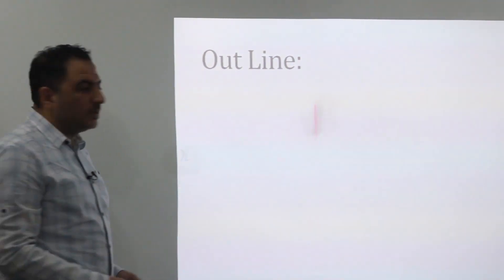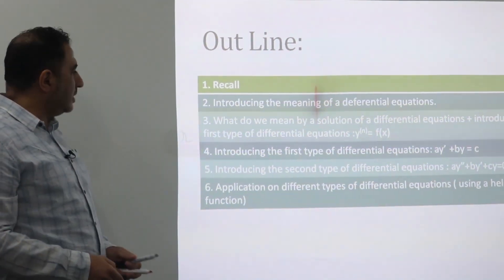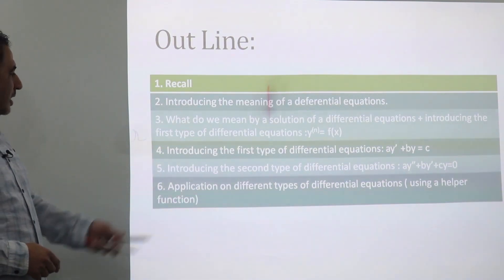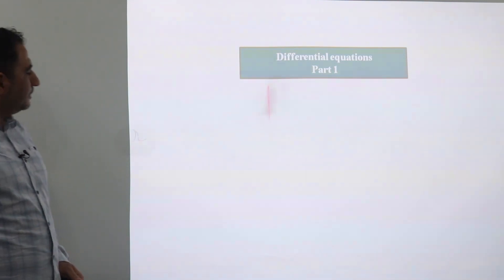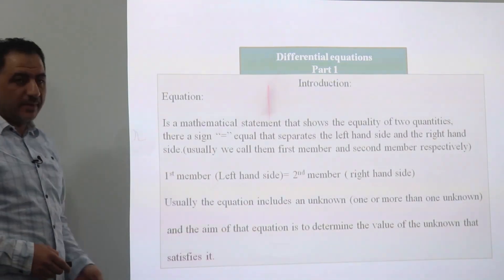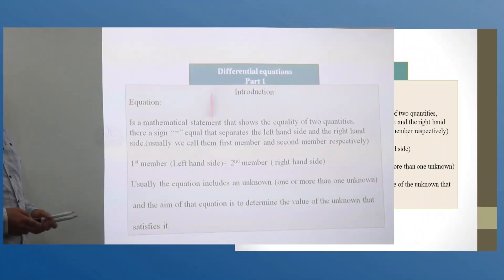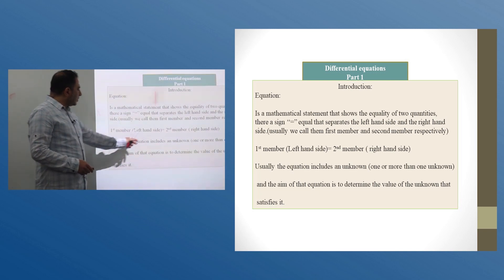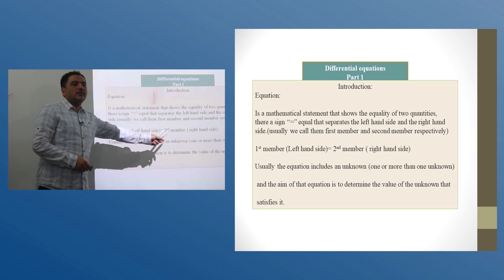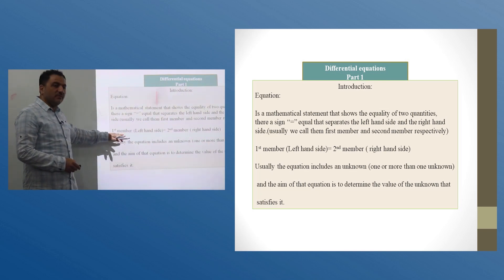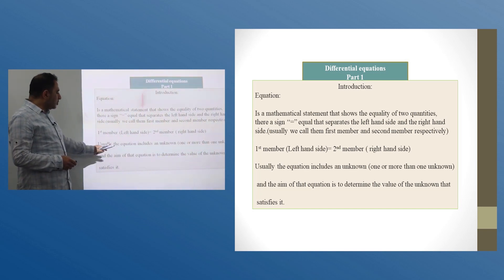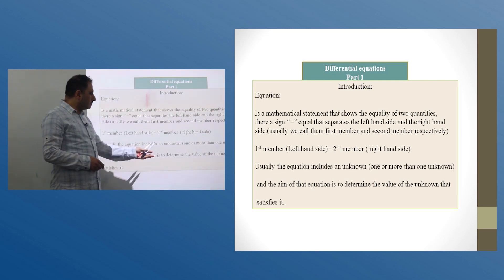We are going to deal with this chapter in this way: first, recall; then introduce the meaning of a differential equation; explain what we mean by a solution of a differential equation; and introduce the types of differential equations. An equation is a mathematical statement that shows the equality between two quantities, with an equal symbol between them. Usually an equation has a left-hand side and a right-hand side, also called the first member and second member. An equation usually includes one unknown or more than one unknown.